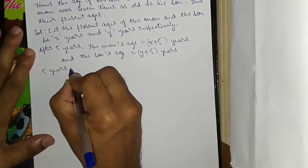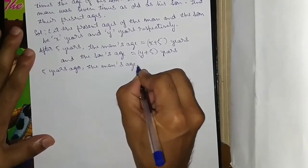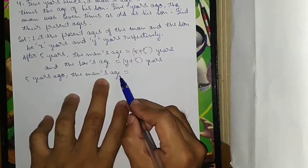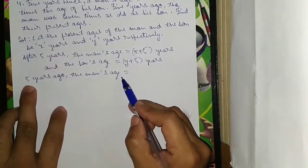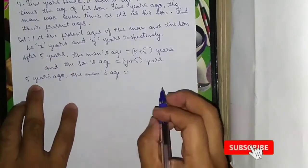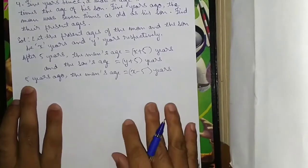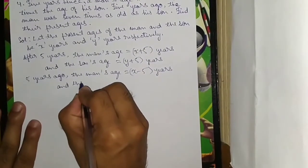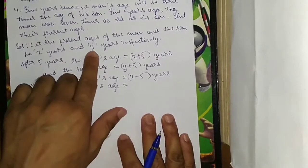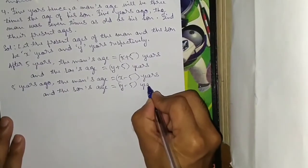Five years ago, the man's age was X minus 5 and the son's age was Y minus 5 years.